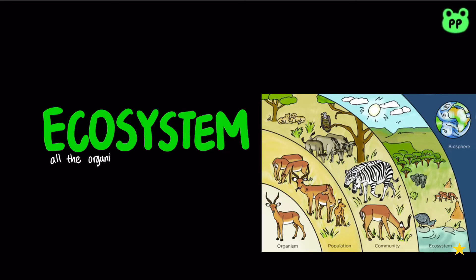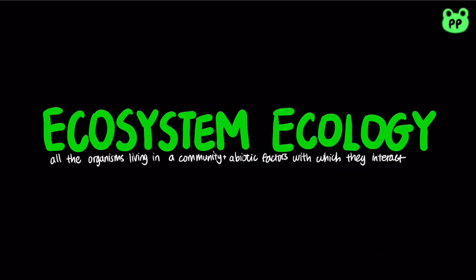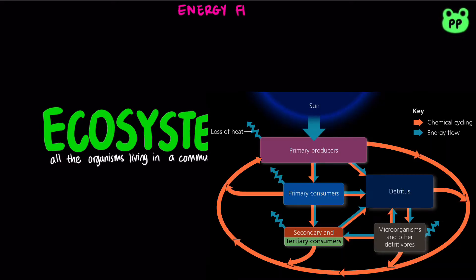An ecosystem consists of all the organisms living in a community, as well as the abiotic factors with which they interact. Regardless of an ecosystem's size, its dynamics involves two main processes: energy flow and chemical cycling. Energy flows through ecosystems while matter cycles within them.